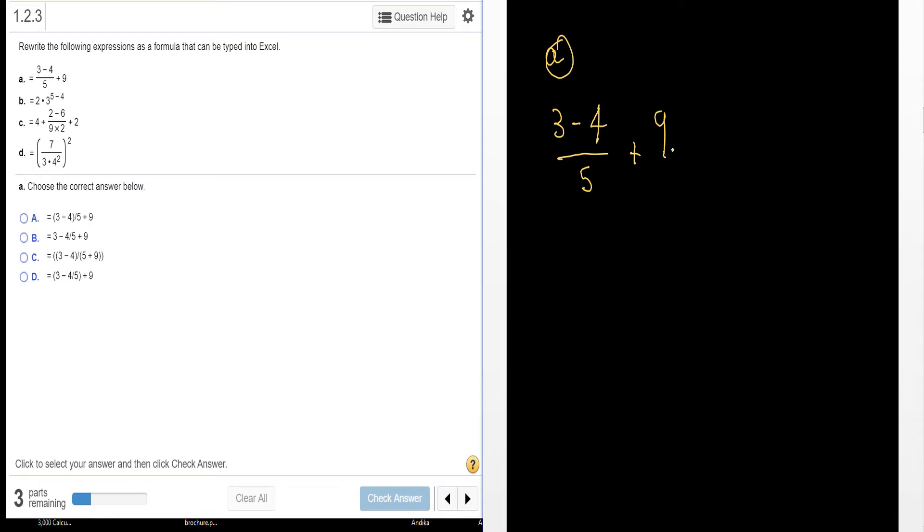3 minus 4 divided by 5 plus 9. Now when we enter this into Excel, you have to write this on a single line. So sometimes you have to group things, add parentheses, so it knows what's a quantity and what's a single value. So when I write it in Excel in a single line, I'm going to have something like quantity 3 minus 4, then I have my division bar here divided by 5 plus 9.